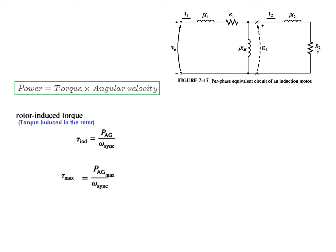For maximum T_max we have to have P_AG maximum. Omega_sync remains the same. P_AG for a single phase is I_2 squared R_2 over S, and for three phase or the total power it will be multiplied by 3.